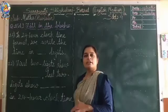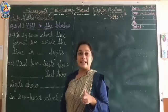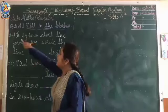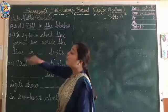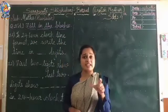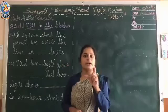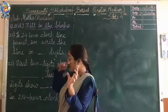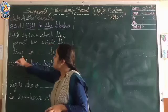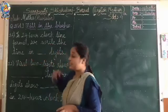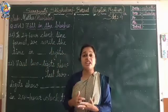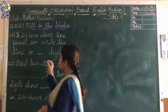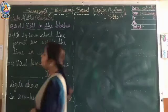The eleventh number: blank is in twenty-four hour clock time format. The format is how we write the time — we write the time in blank digits. How many digits do we need? We need four digits. So the answer is four.